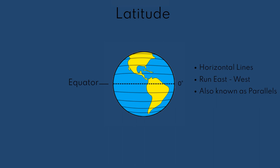Positive latitudes from 0 to positive 90 degrees are found north of the equator while negative latitudes from 0 to negative 90 degrees are located south of the equator.